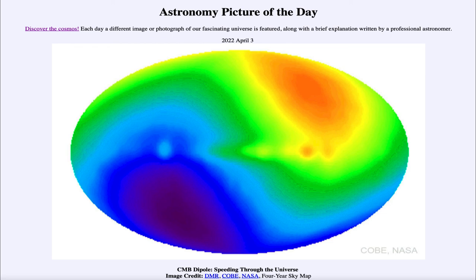So that was our picture of the day for April 3rd of 2022, titled 'CMB Dipole Speeding Through the Universe.' We'll be back again tomorrow for the next picture, previewed to be a 'rural vortex,' so we'll see what that is about tomorrow. Until then, have a great day everyone, and I will see you in class.